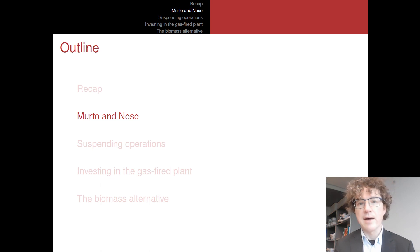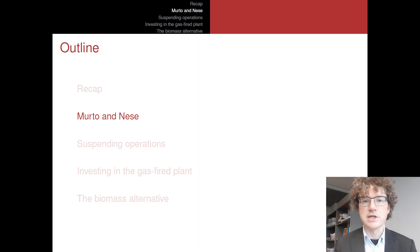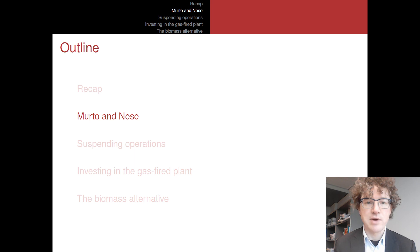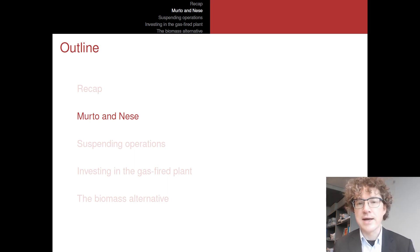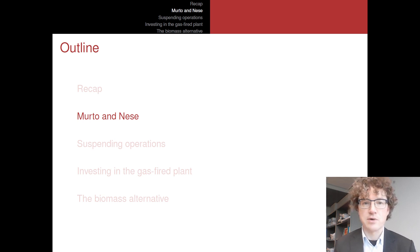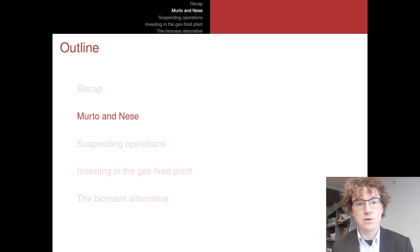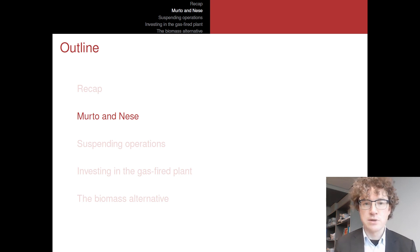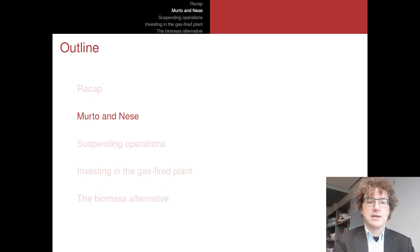That was the recap of what we did last time. Now we will apply this methodology in the Morto-Neisse framework, looking first at investment in a gas-fired power plant, then at the choice between two alternatives — a biomass plant or a gas-fired plant — treated as an option on the stochastic gas price. We will cover this in the next video.